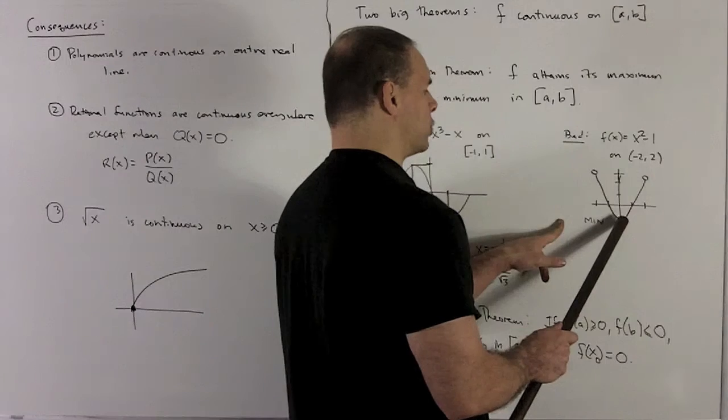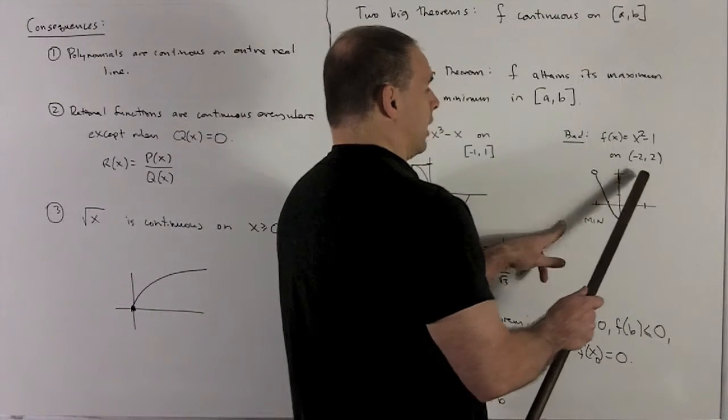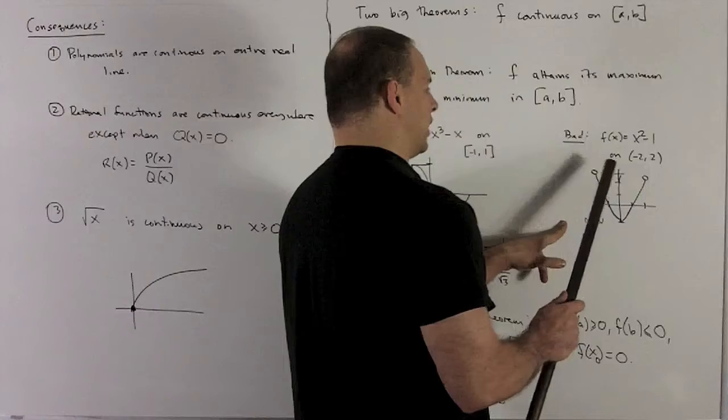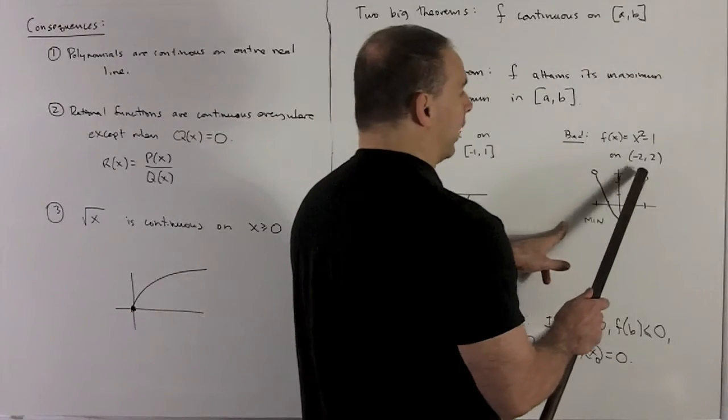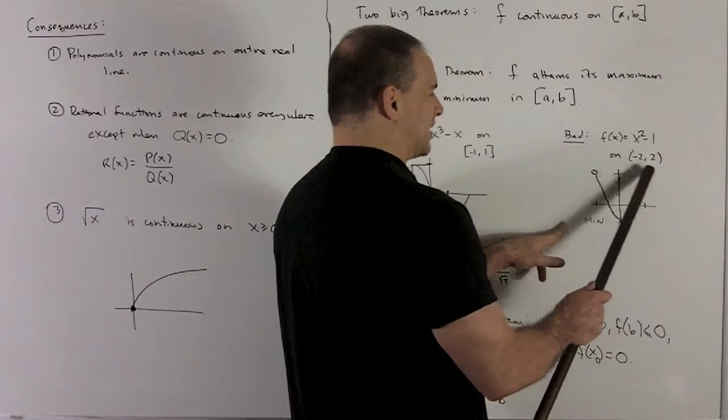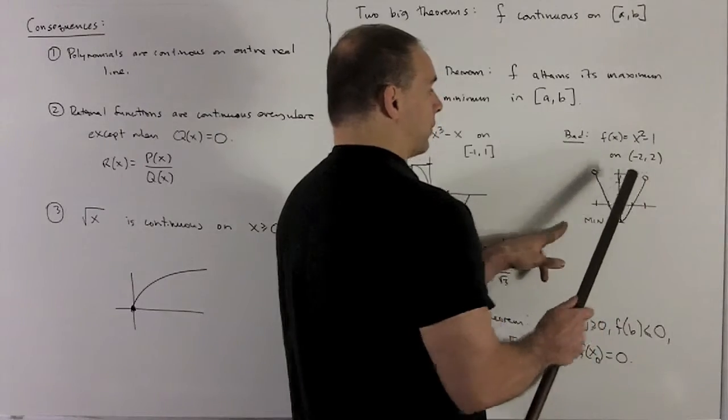We hit the minimum for sure at 0. But the problem is, if I try to get to these points here where our value is going to be equal to 3, there's going to be no point inside the interval that's going to get me to 3.